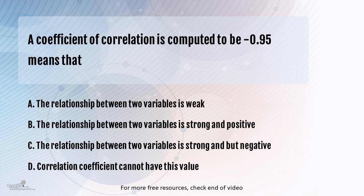The options that we have for this question are: the relationship between the two variables is weak; the relationship between the two variables is strong and positive; the relationship between the two variables is strong and negative; and the last option is the correlation coefficient cannot have this value at all, so it is an incorrect reading.